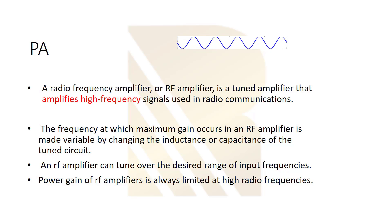The frequency at which maximum gain occurs in an RF amplifier is made variable by changing the inductance or capacitance of the tuned circuit. So, the power amplifier is a tuned circuit, which includes transistor, inductance, capacitance, and with tuning this, we can reach a gain we want, or power we want, in a single frequency.